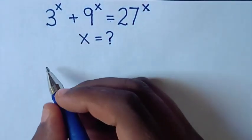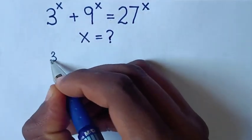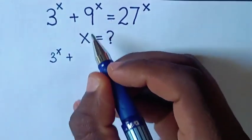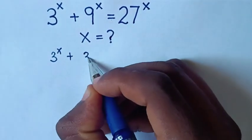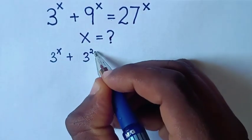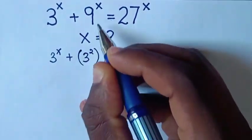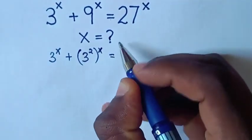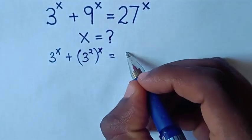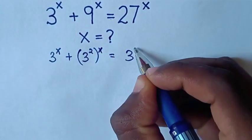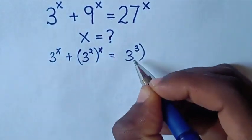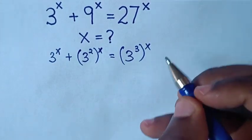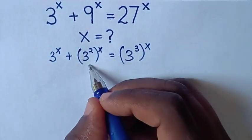So first, from here: 3 power x plus 9, which is the same as 3 squared, bracket power x, is equal to 27, which is the same as 3 power 3, bracket power x.